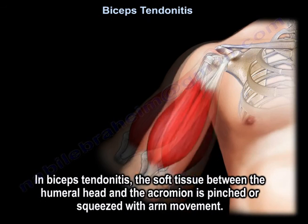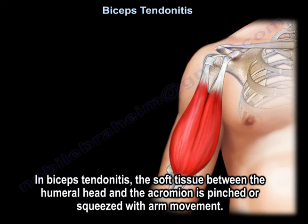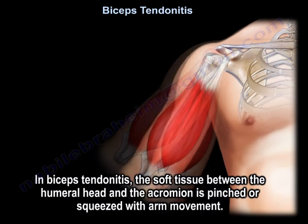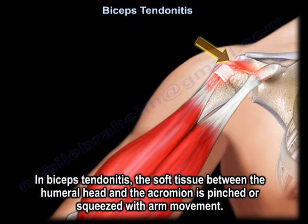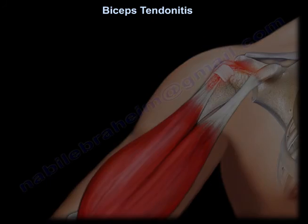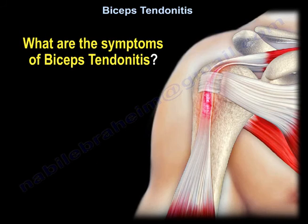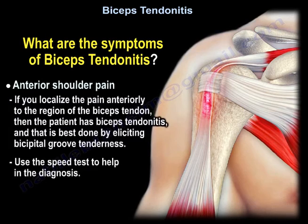In biceps tendinitis, the soft tissue between the humeral head and the acromion is pinched or squeezed with arm movement. The main symptom is anterior shoulder pain. If you localize the pain anteriorly to the region of the biceps tendon, then the patient likely has biceps tendinitis.